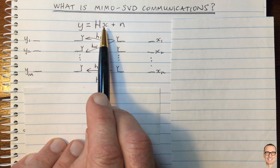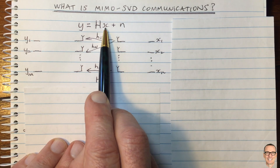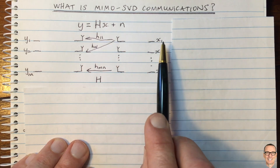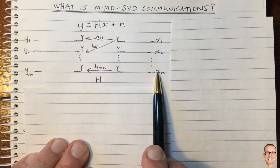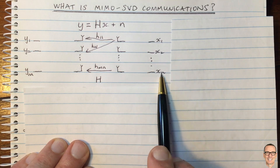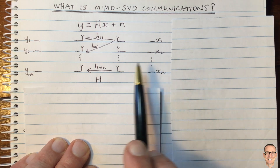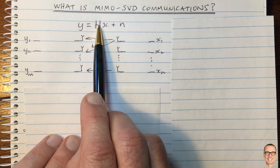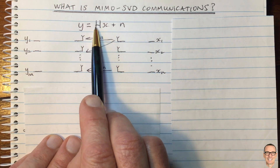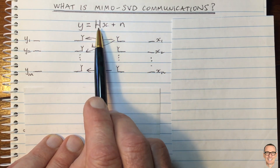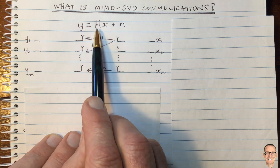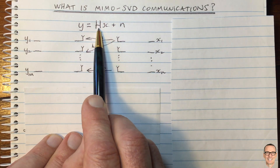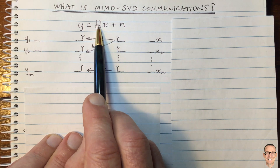We've got Y and we'd like to get an estimate of X — we want to work out what the data was in each of these data streams from the transmitter. If you could measure the channel and knew it at the receiver, then you could try to invert the channel.